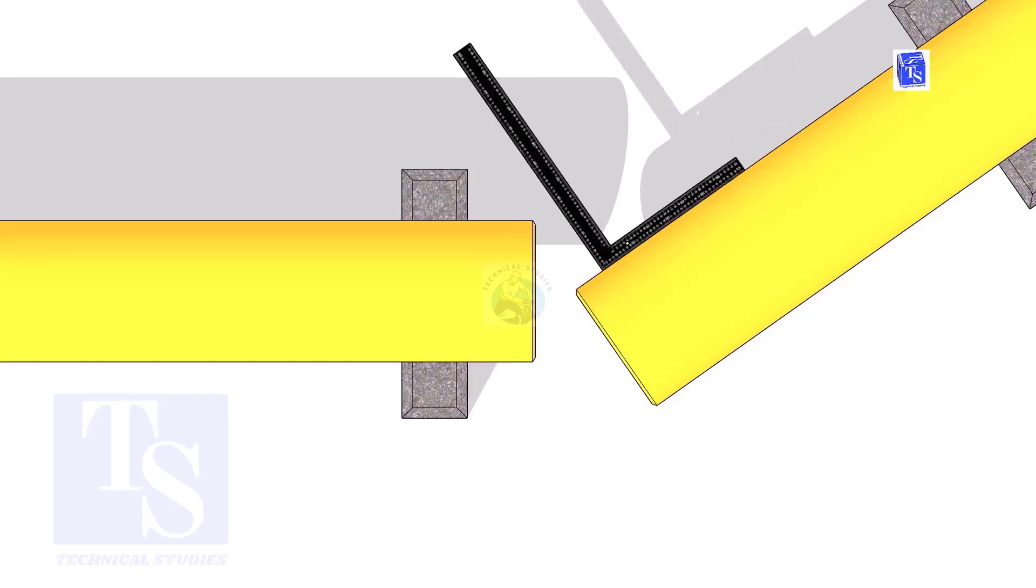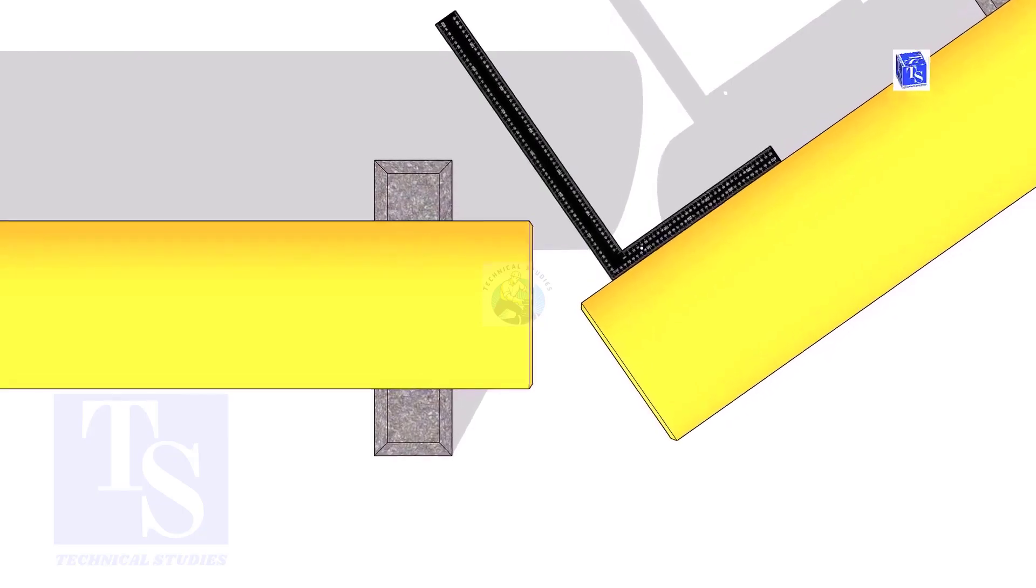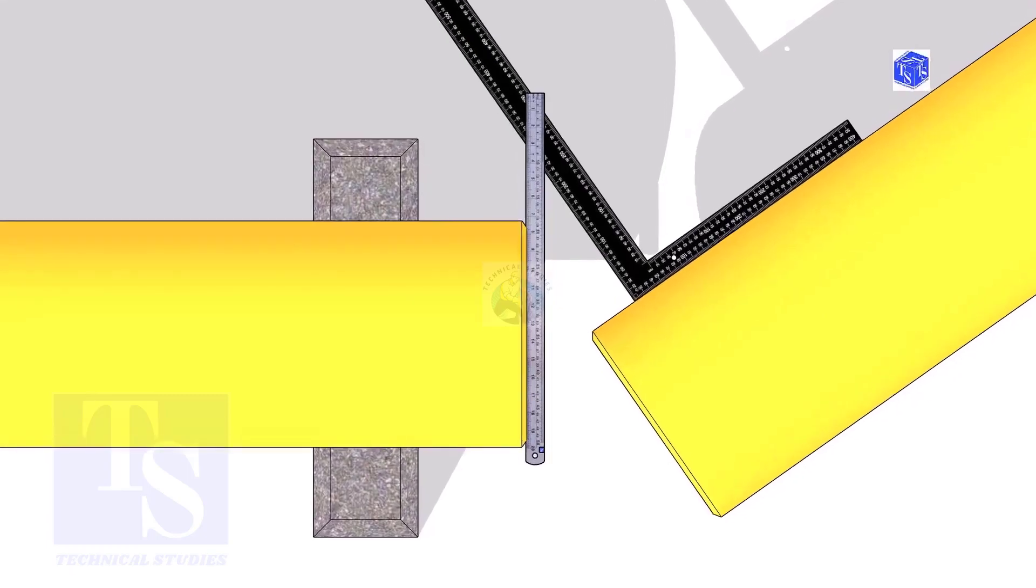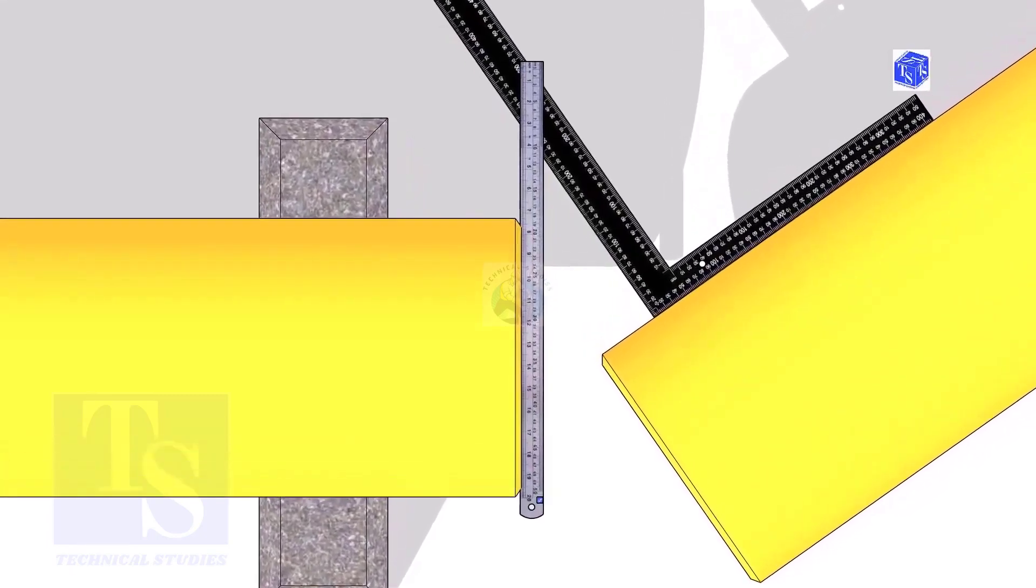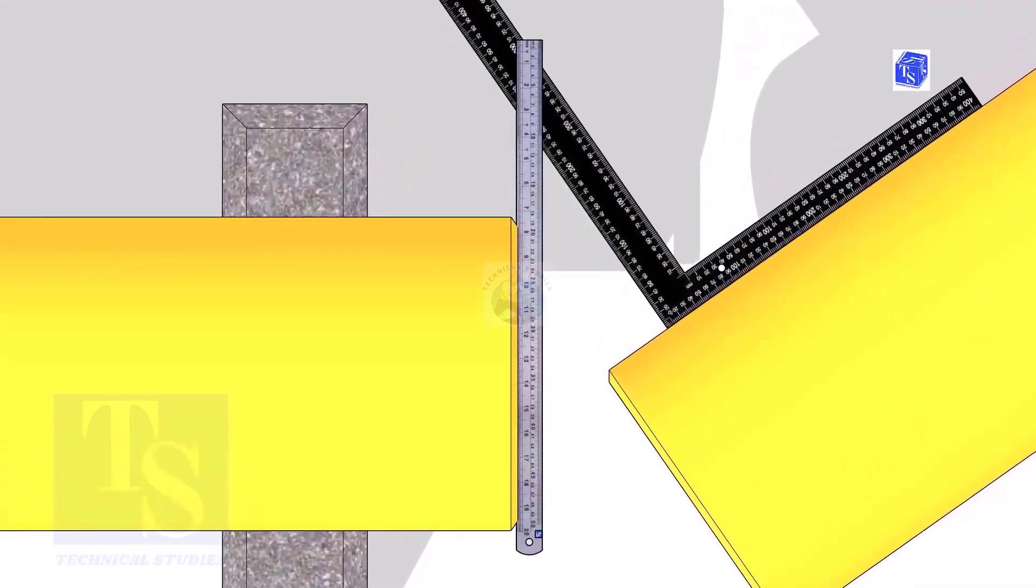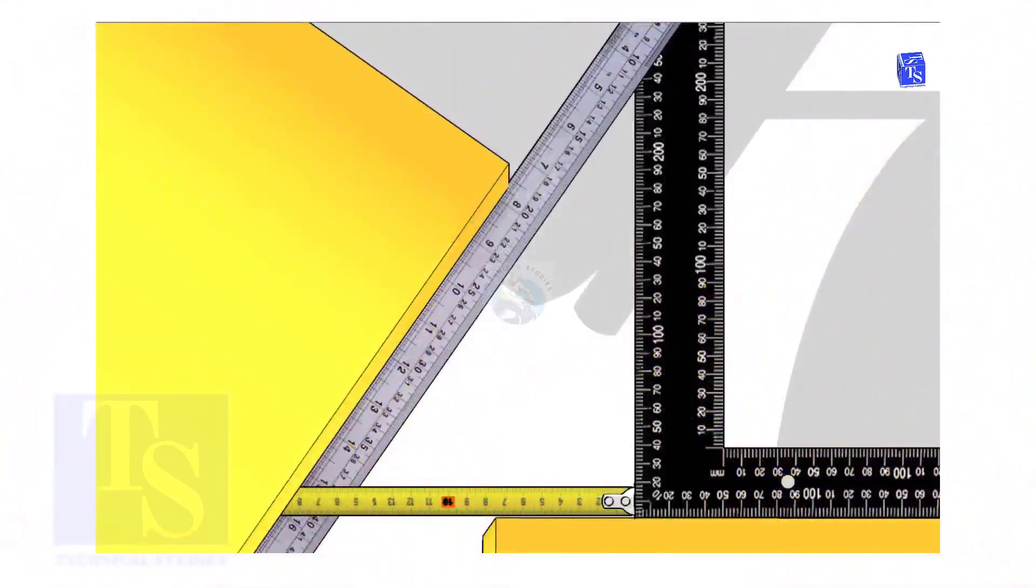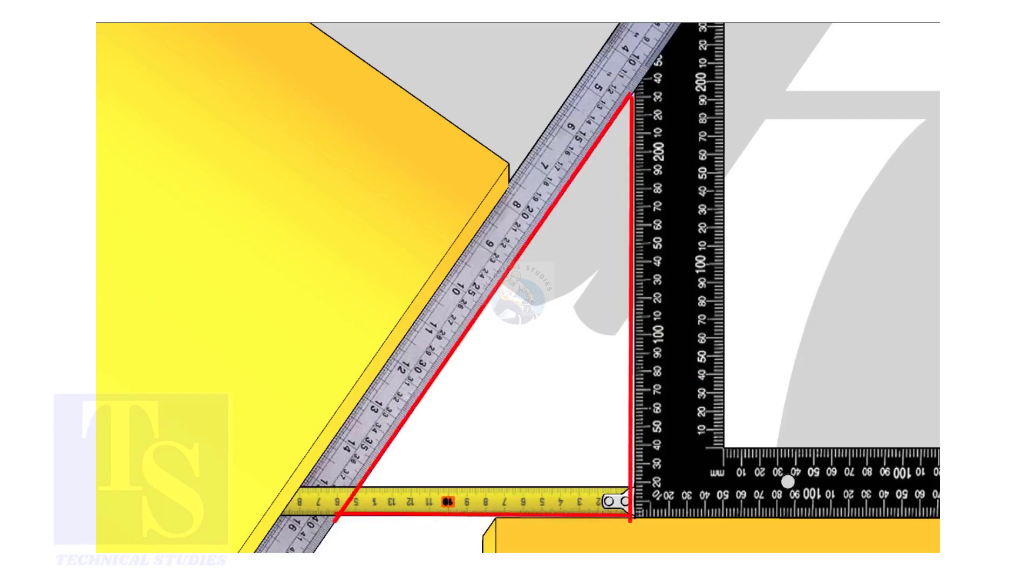Hold a right angle on the pipe as shown. Hold a scale on the other pipe as shown. Measure and note down the dimensions of the triangle.